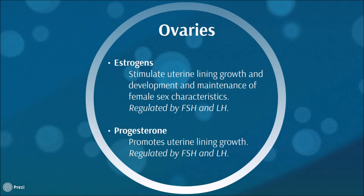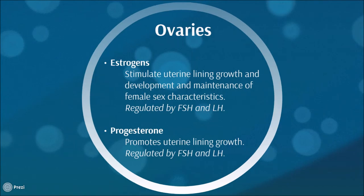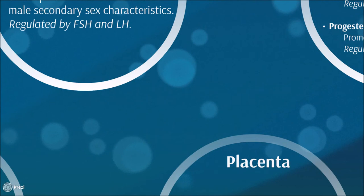Ovaries, on the other hand, produce estrogens, which are steroids that stimulate uterine lining growth and are responsible for the development and maintenance of female secondary sex characteristics, regulated by FSH and LH. They also produce progesterone, which is a steroid that promotes uterine lining growth, also regulated by FSH and LH.